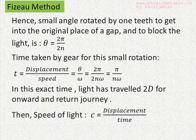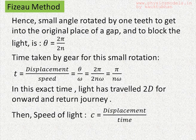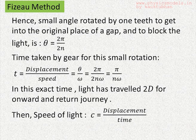The time taken for this small rotation for a tooth into a gap zone is time equals displacement by speed. That's equal to theta divided by omega, and that becomes two pi by two n divided by omega. That's pi by n omega.